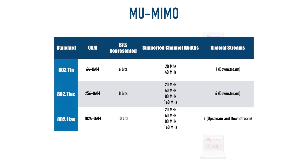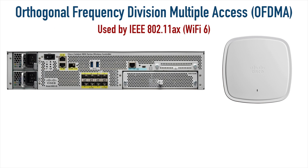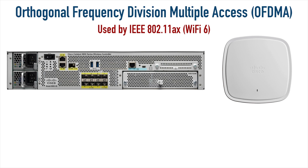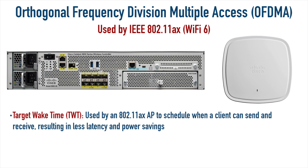Now let's talk about some of the other advantages of 802.11ax. One feature of Wi-Fi 6 is called Target Wake Time, or TWT. This gives us what is called deterministic access to the network — the access point literally tells the clients when they are allowed to transmit and receive. They don't just have access to transmit anytime they want; they're given a schedule. And this might sound like a bad thing.